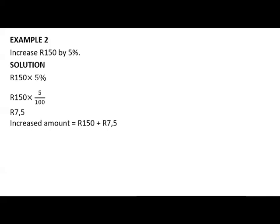Now, example two. Increase R150 by 5%. Firstly, you need to find the value of that 5%. What is 5% of R150? You will take R150, times it by 5%. 5% is the same as 5 divided by 100. R150 times 5 divided by 100 will give you R7.5. To increase that R150, you will take the R7.5, add it with the R150. R150 plus R7.5 will give you R157.5.